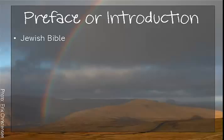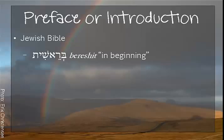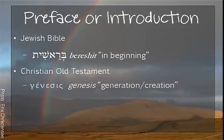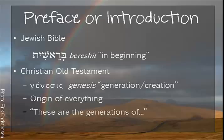Jewish tradition calls the book Bereshit, from its first words meaning 'in beginning.' Christians normally know it as Genesis, from the Greek word meaning creation or generation. That's the name given to it in the Septuagint because it gives an account of the origin of everything, and because of the phrase 'these are the generations of' — Eli toledot in Hebrew — which seems to structure the book. 'Generations' in Hebrew is 'genesis' in Greek.